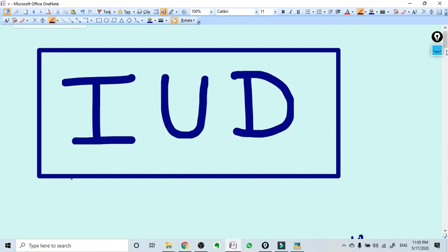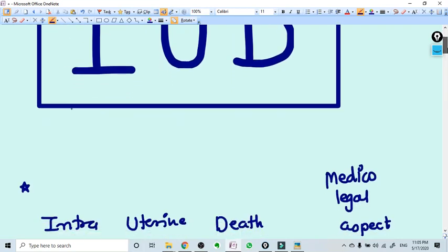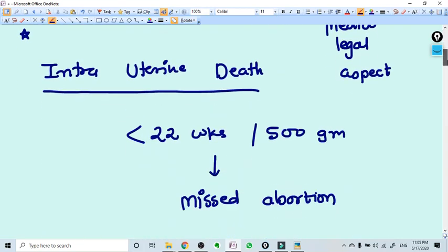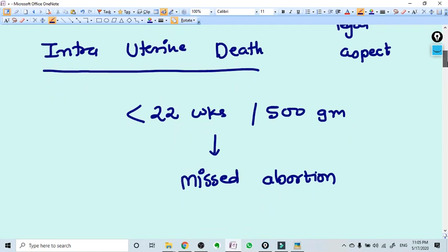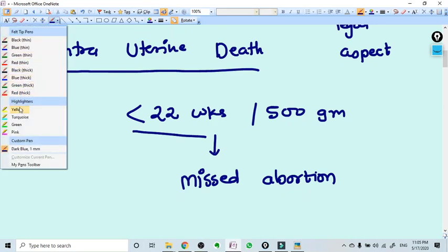Hi everyone, in this video we're going to talk about intrauterine death, or IUD. The very first concept you need to know is before 22 weeks, that is the period of viability, or the weight of the fetus.